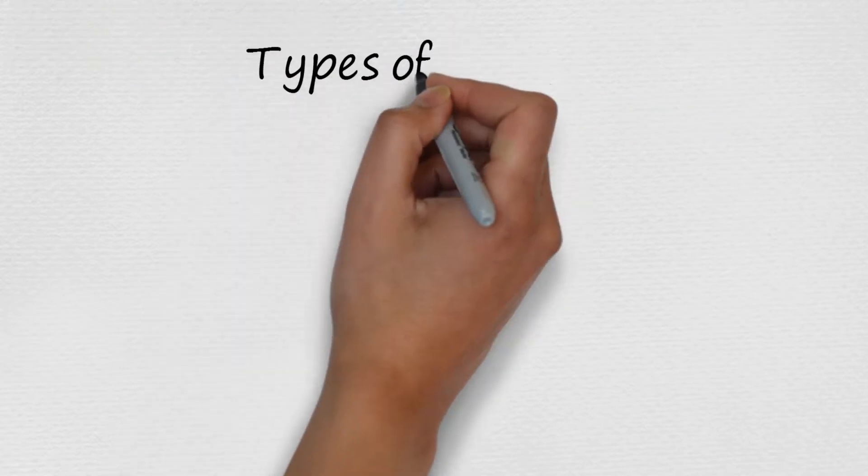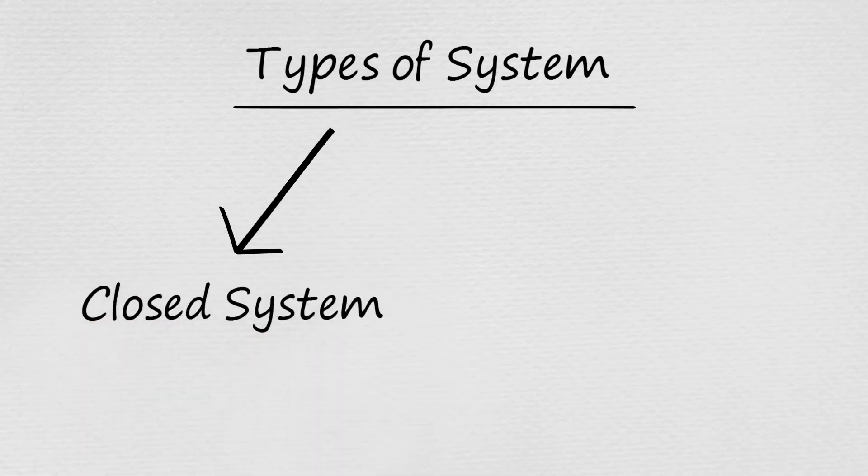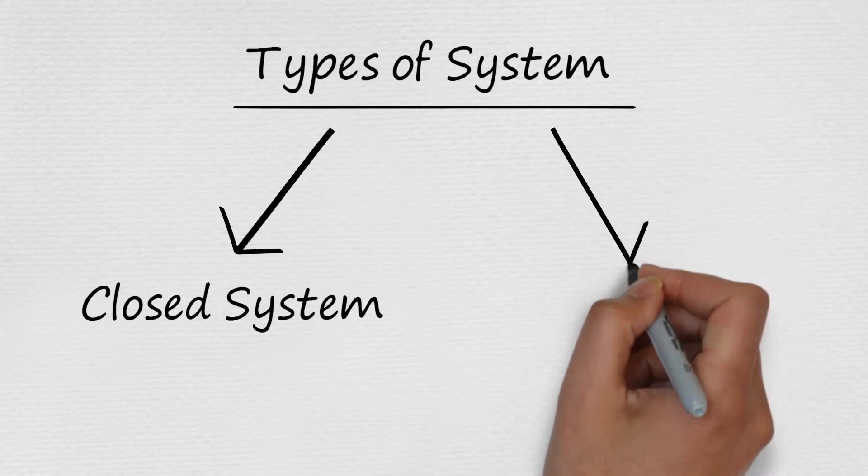Depending upon fixed mass or fixed volume in space for study, system is considered to be of two types. One is closed system and other one is open system.